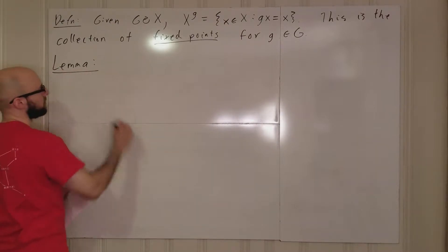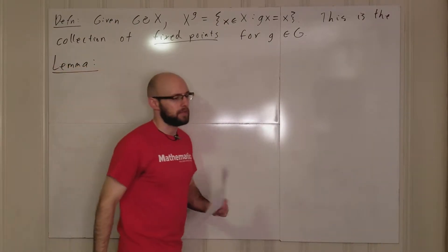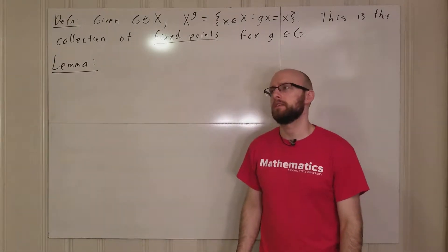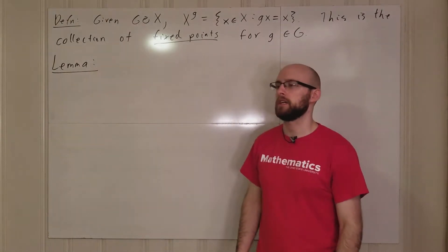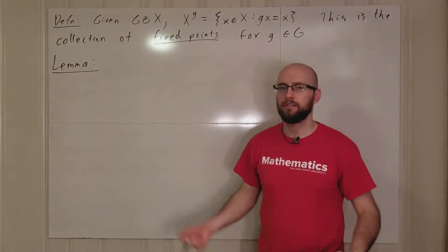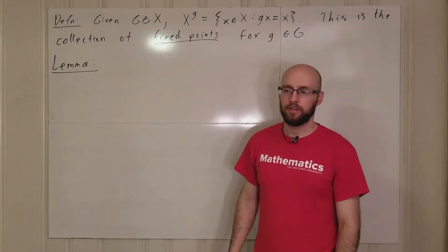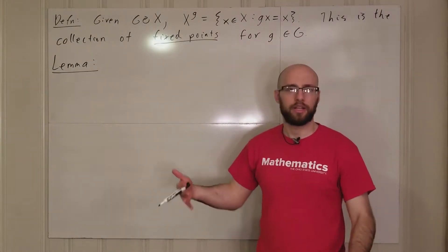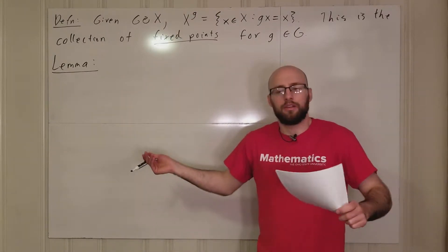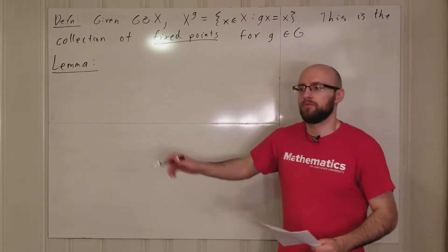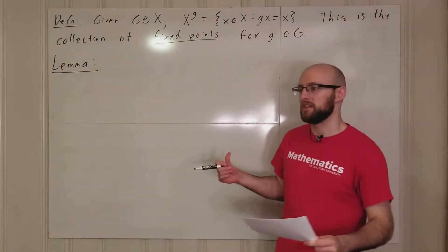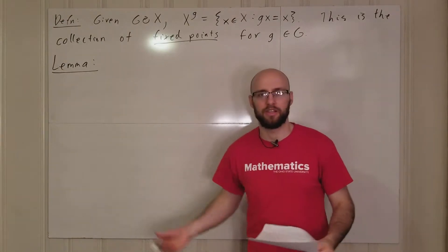This is Burnside's lemma. Burnside was a mathematician — I want to say early 1900s or late 1800s — who wrote a textbook on group theory. He included this lemma and said it was a really well-known result, without crediting anyone. That textbook turned out to be the best source for the lemma, so it just became Burnside's lemma even though he didn't come up with it — he just happened to mention it.